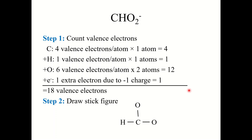Now let's look at a slightly more complicated example: CHO₂⁻. Step one, count valence electrons: four from carbon, one from hydrogen, and twelve from the two oxygen atoms, then add one more since this is an anion — a total of eighteen valence electrons. Step two, draw a stick figure. You can't put hydrogen in the center; between carbon and oxygen, carbon is less electronegative so put carbon in the center. Also, the atom present in fewer numbers generally goes in the center — there's only one carbon. Draw single bonds to hydrogen and the two oxygen atoms.